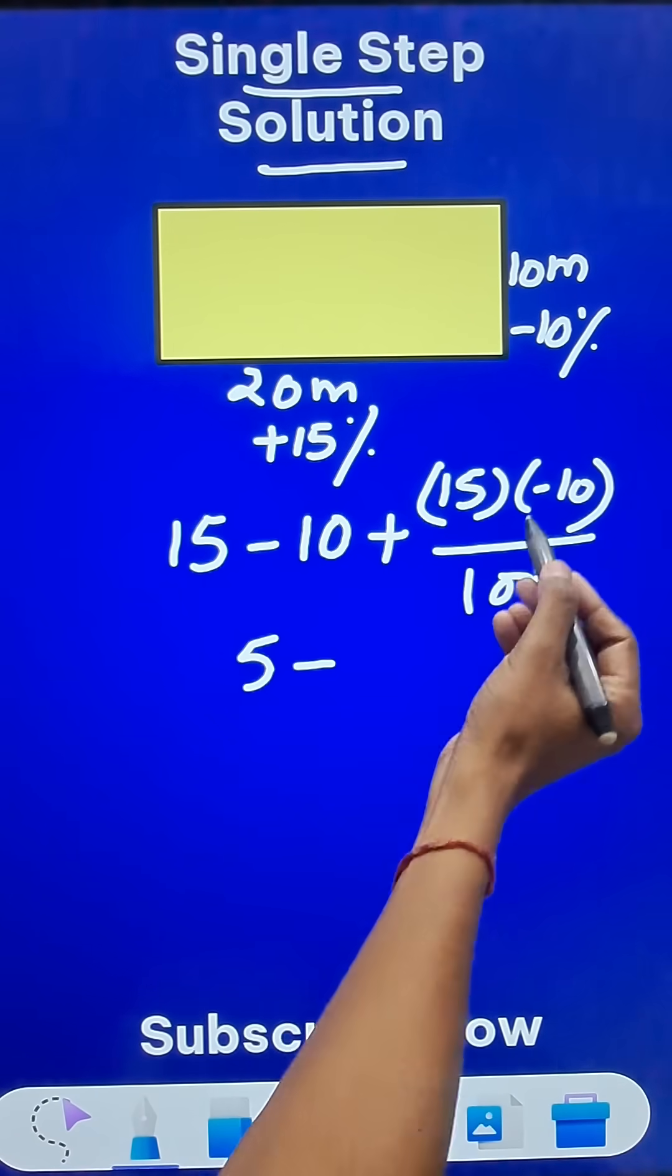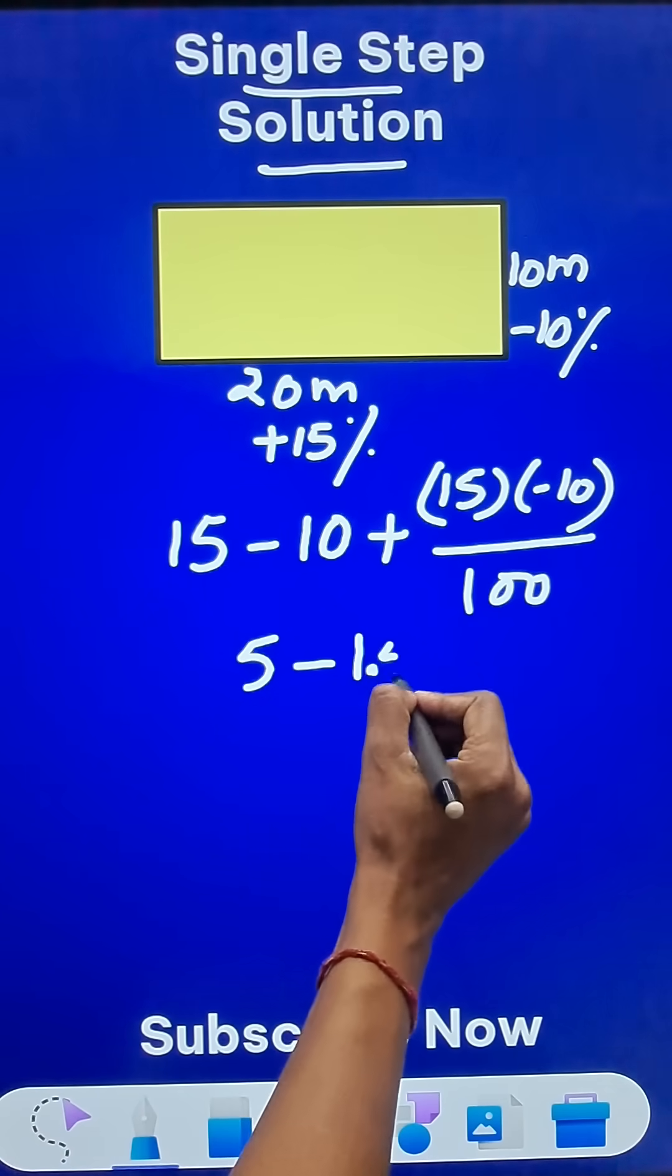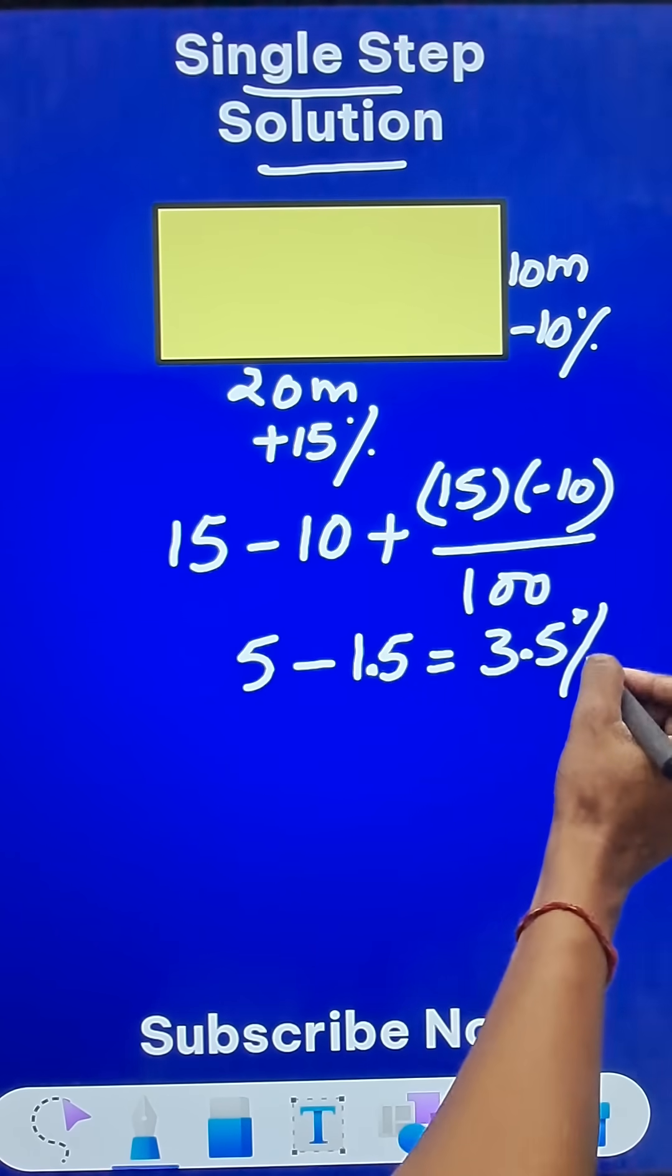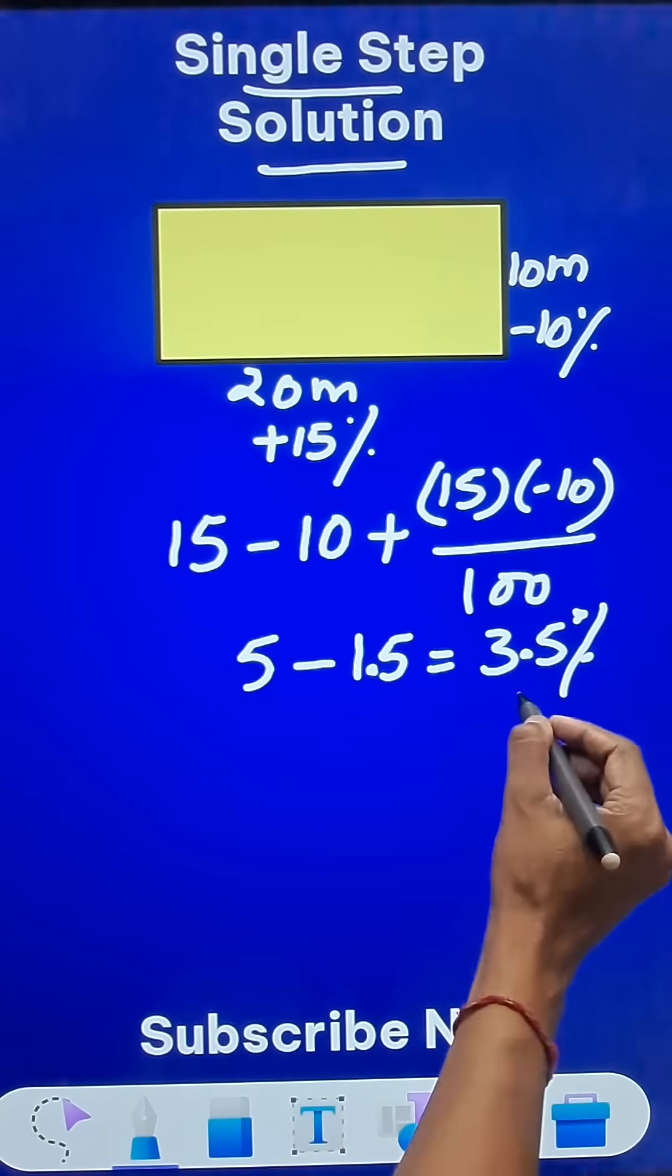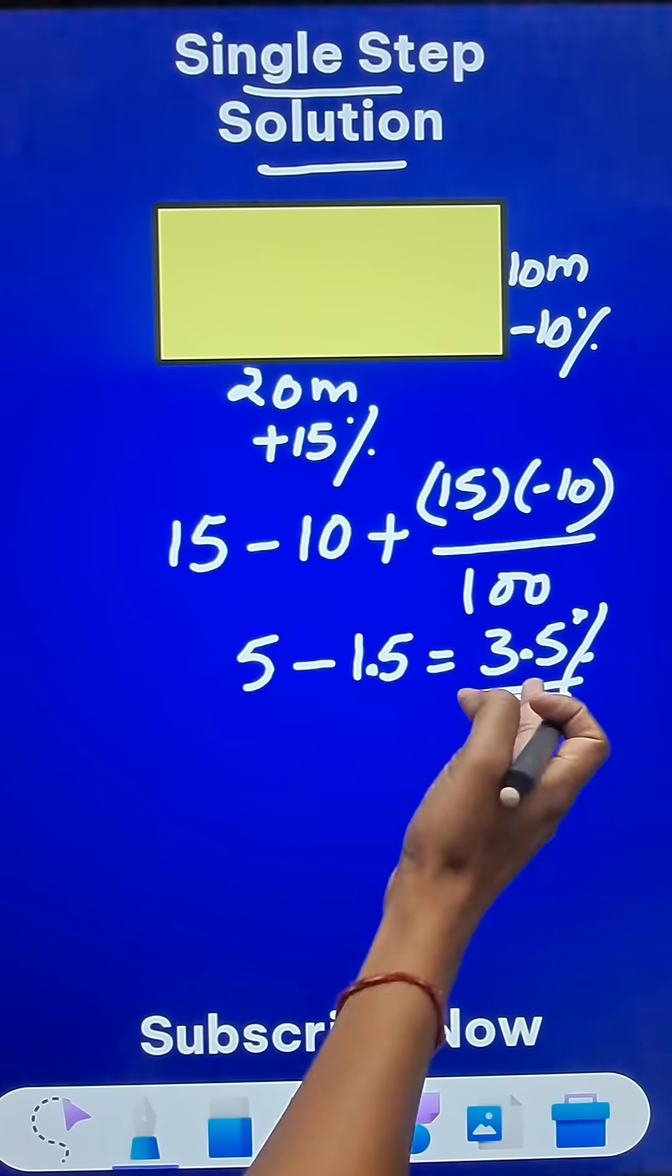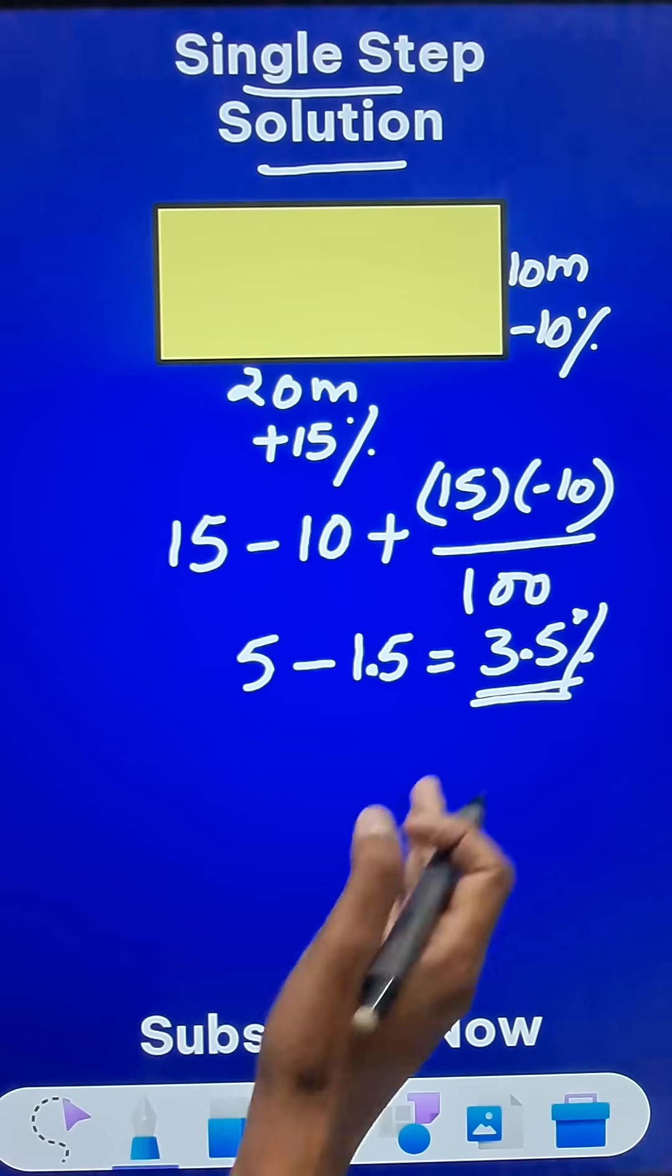And you notice that the answer is plus 3.5. That means there will be a 3.5% increase because it is positive, so the area will increase by 3.5%.